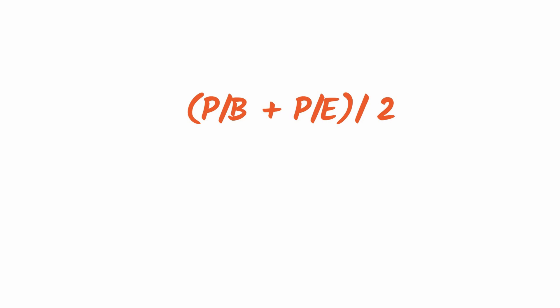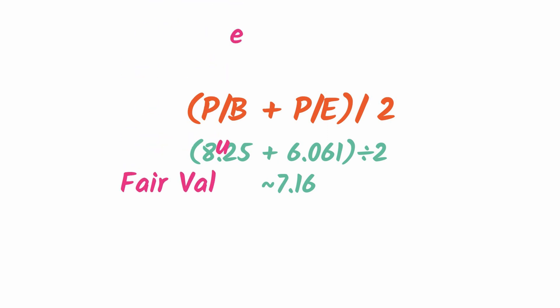To get a more holistic fair value, since the PE gives a much lower value than the PB, I normally average the two. So $8.25 plus $6.06 divided by two gives approximately $7.16 as the fair value. And that's it!